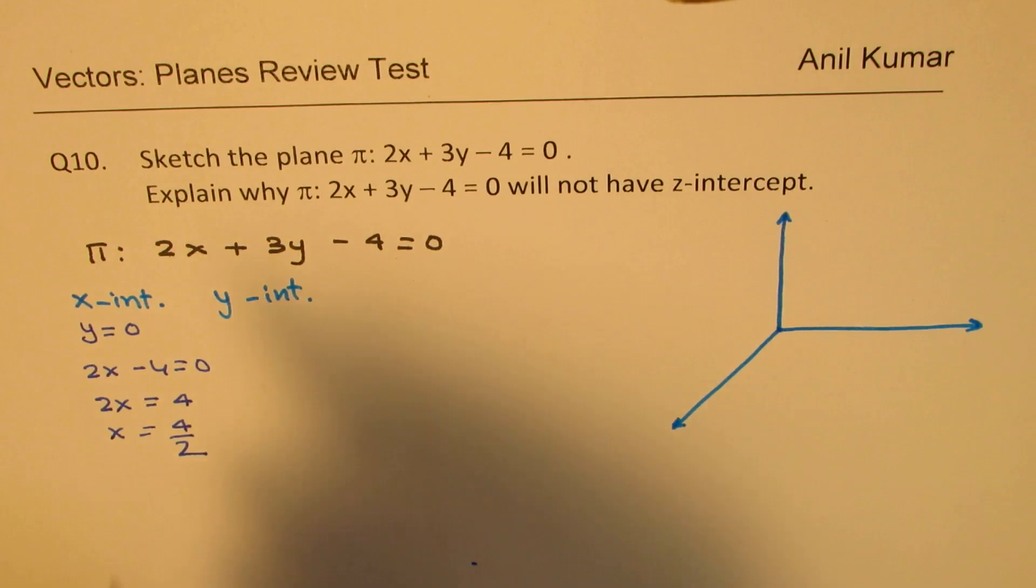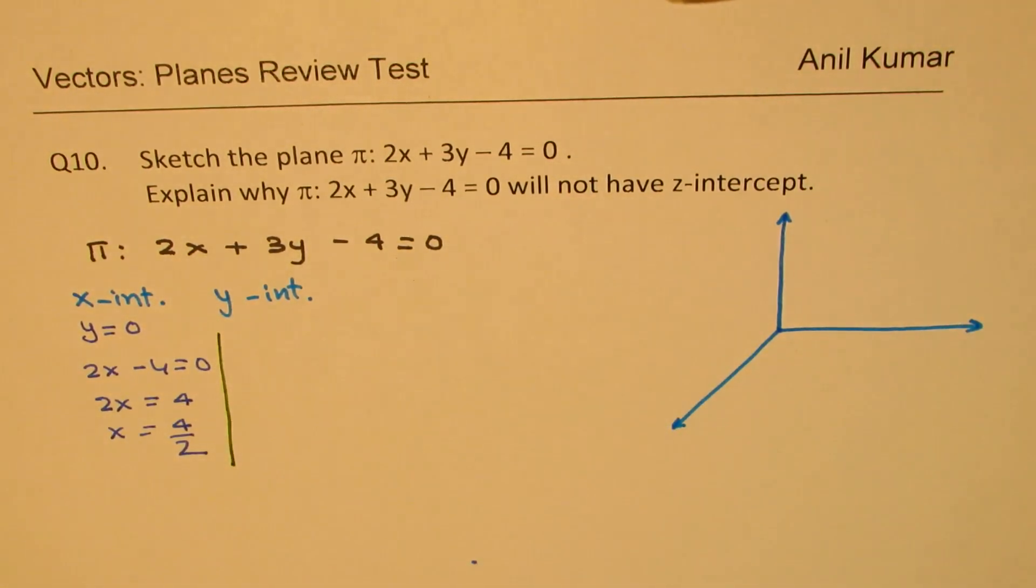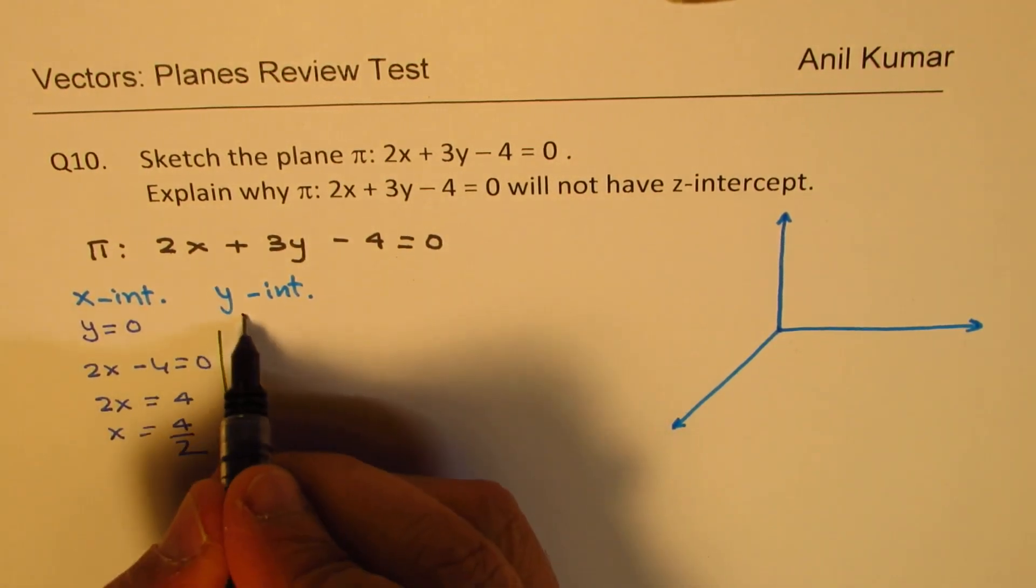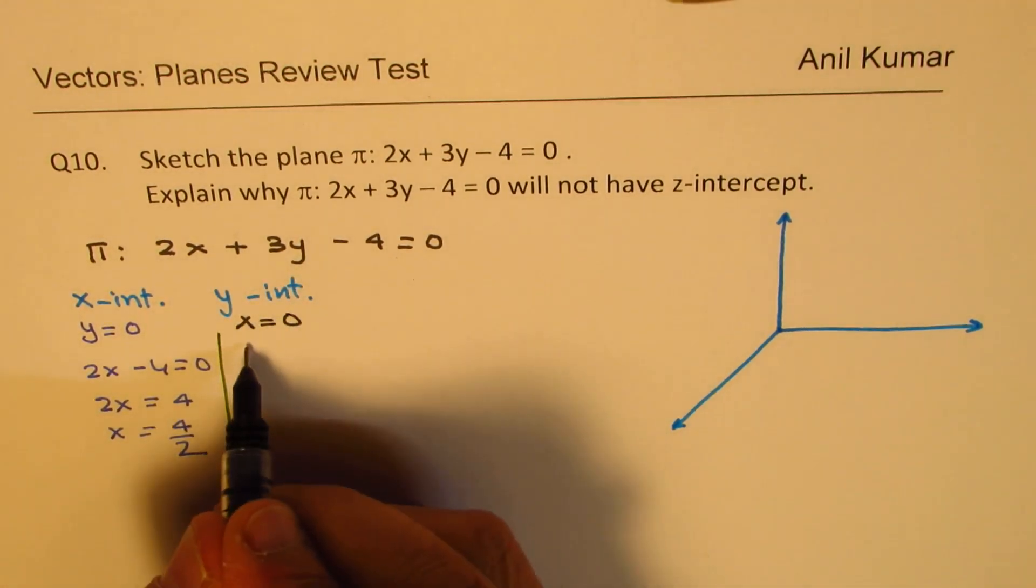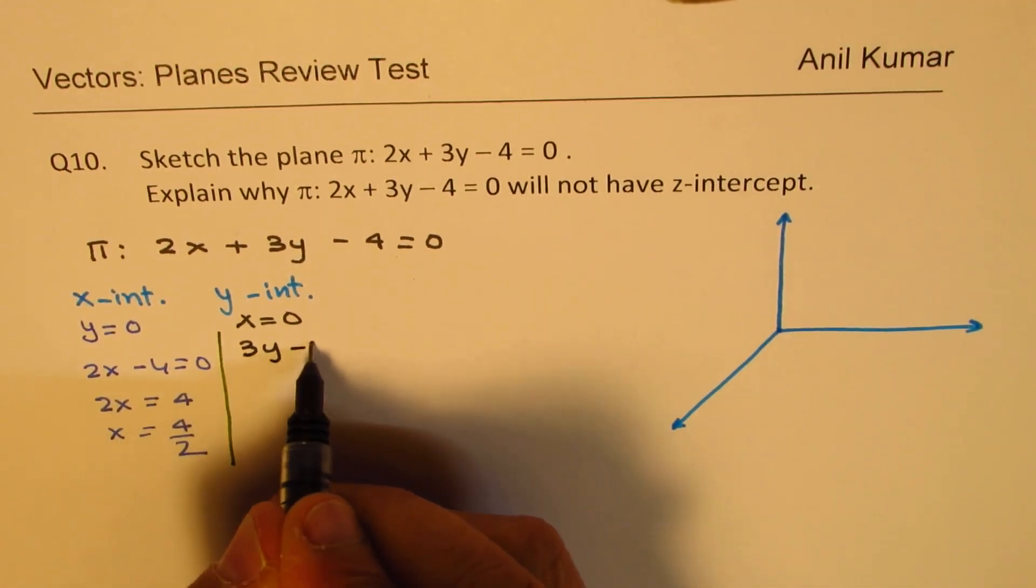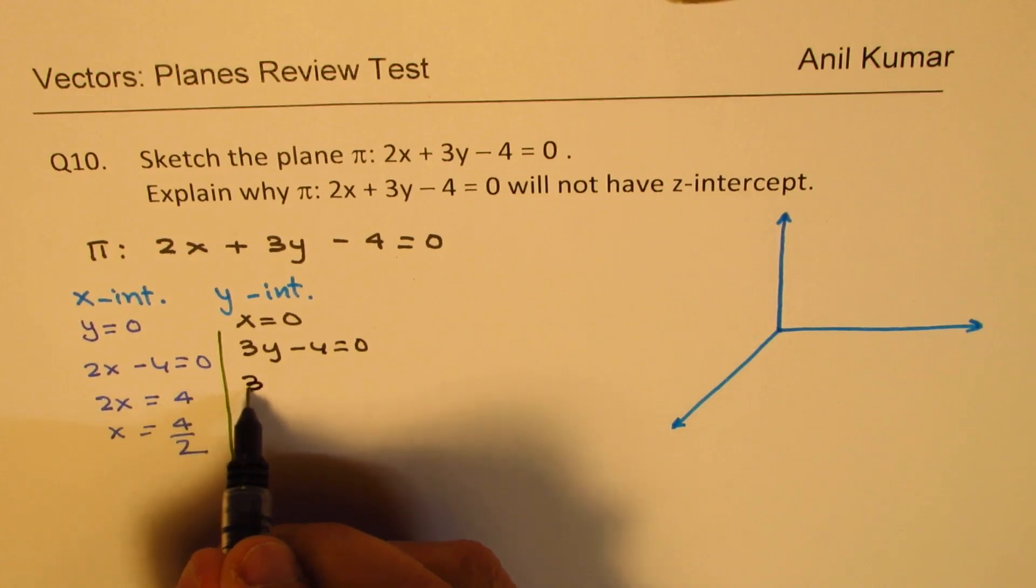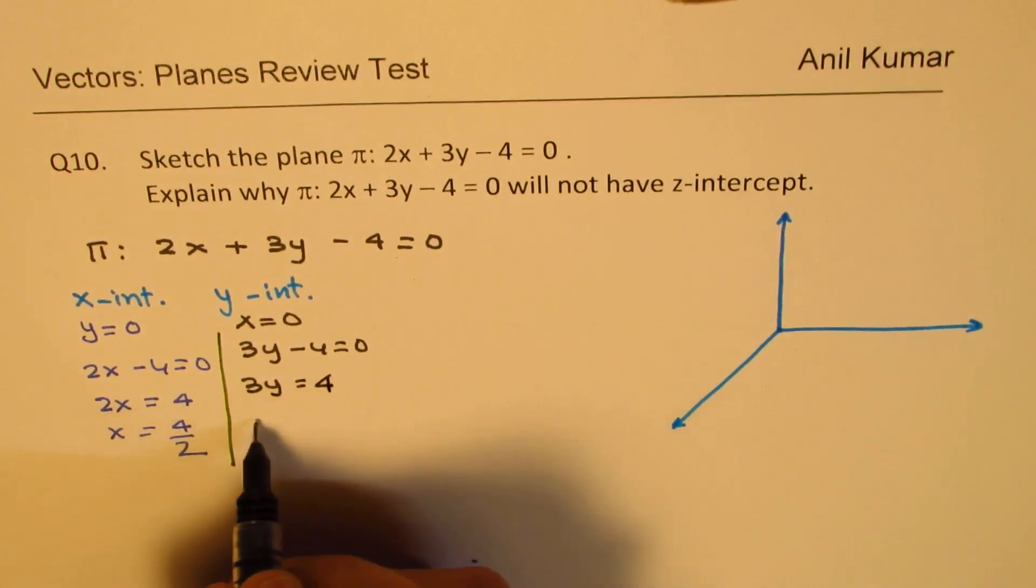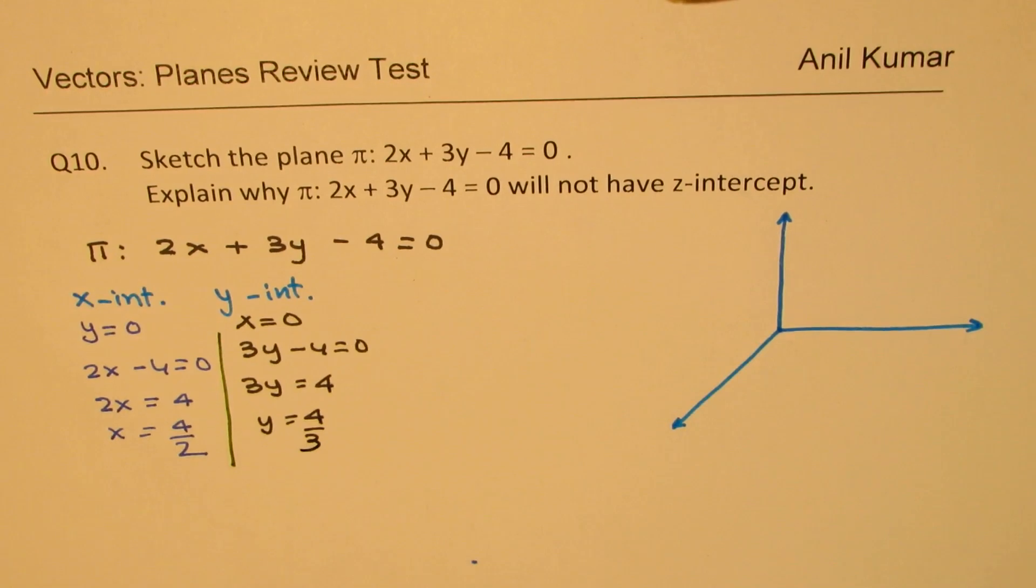As far as the y-intercept is concerned, we'll put x = 0. And then we get 3y - 4 = 0. 3y = 4, or y = 4/3. So these are the points which we have got.